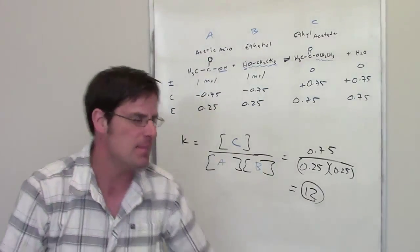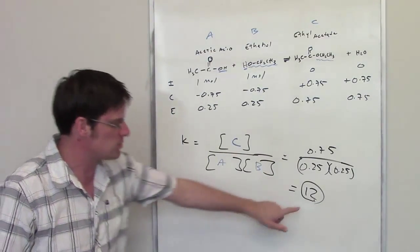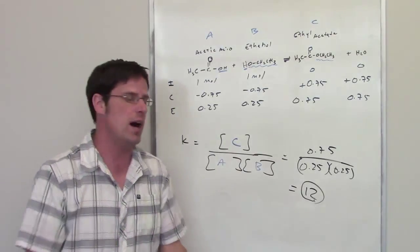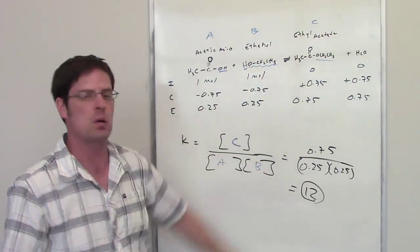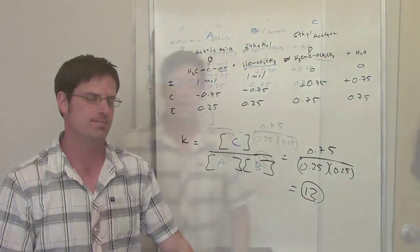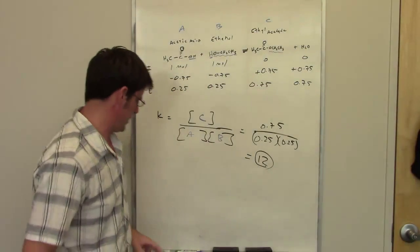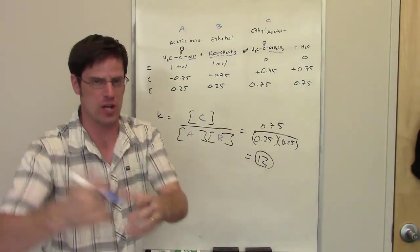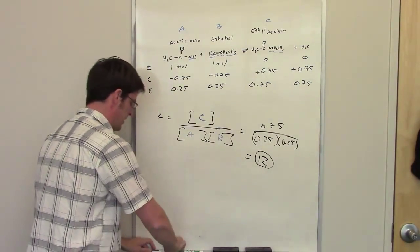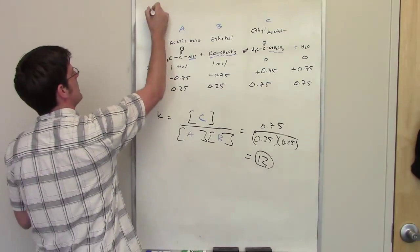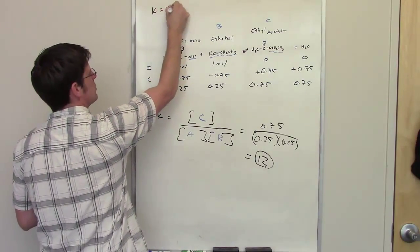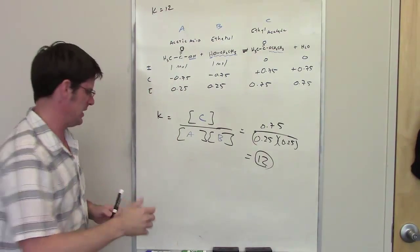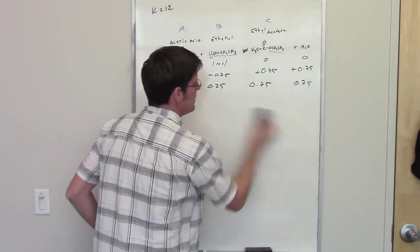So that is the equilibrium rate constant for this reaction. Now, the beautiful thing about that is that it tells me, because that number is much larger than 1, that this is an equilibrium reaction that heavily favors products over reactants. Okay, now we have a follow-up question. It says that in a separate, so this is the answer to part A, that the equilibrium constant comes out to be 12. I'm going to go ahead and write that up here. So I'll write the equilibrium constant equal to 12 because that will become relevant in a little bit. I'm going to go ahead and erase this section right here so that we can go on to the second question.